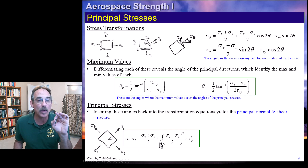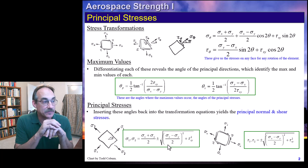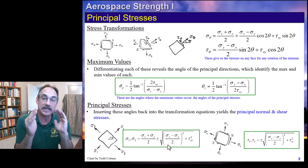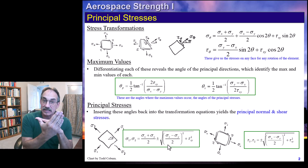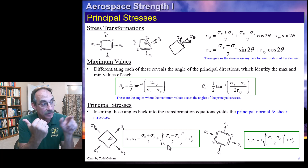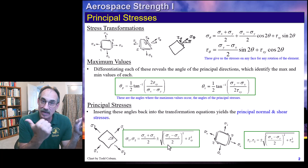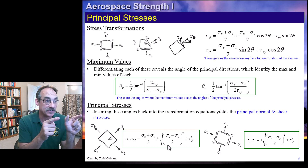If we plug theta p into the normal stress equation and theta s into the shear stress equation, we get the maximum values. This equation gives us the normal stress; this equation gives us the shear stress. The first equation has a plus-minus sign, meaning we get two values — two faces which can have normal stresses. Using the plus sign gives sigma 1, the stress on the face that was x now rotated to angle theta. Using the minus sign gives sigma 2, the stress on the face perpendicular to that.